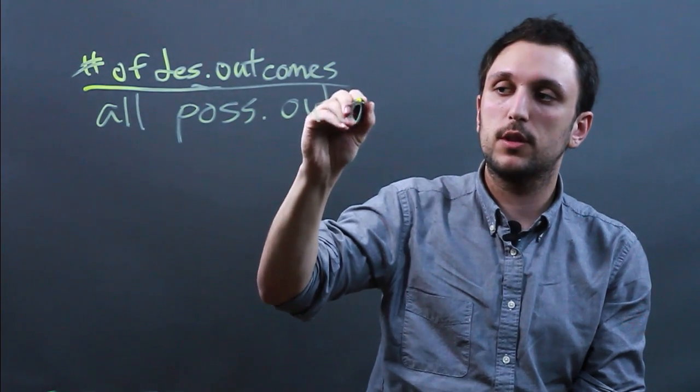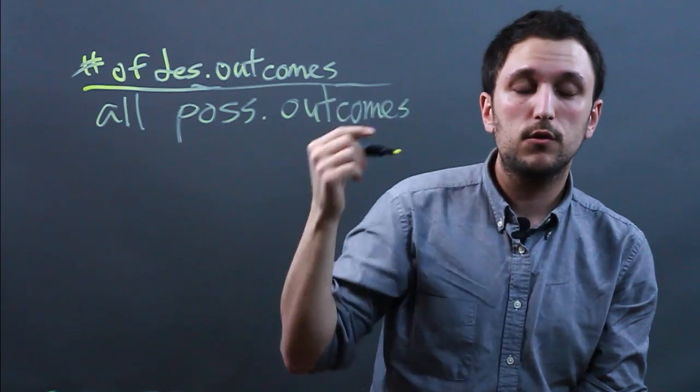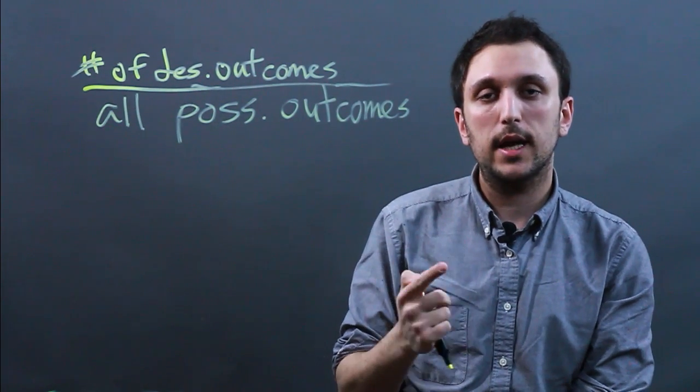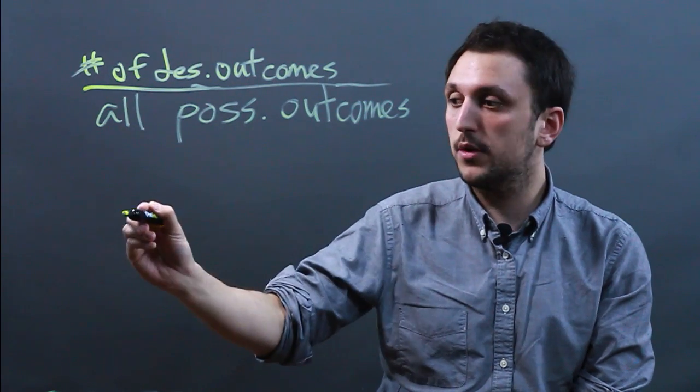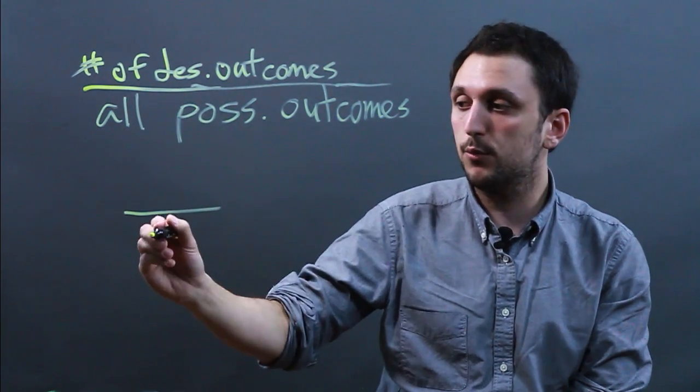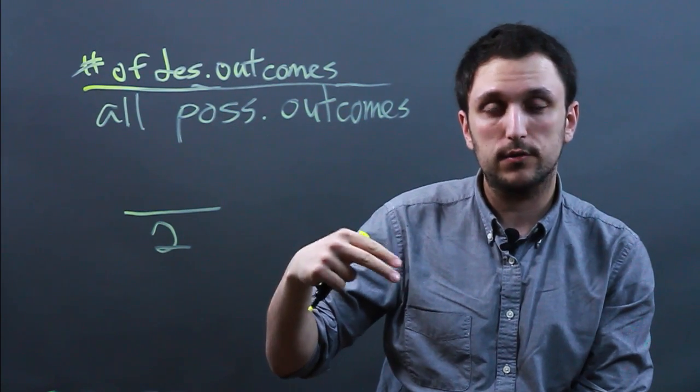So, using this fraction, let's think about a coin toss. When you flip a coin, you can either get heads or tails. So, our denominator of all possible outcomes would be two - heads or tails.